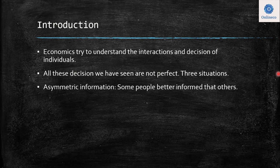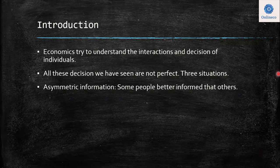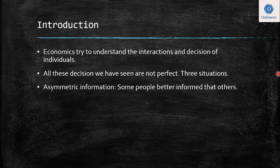The first thing we want to introduce is asymmetric information. As the name says, the information between parties is not balanced because some people have better information than others. Some people are better informed than others, and because of this information, some parts of the market can take advantage of that, and then the end situation is not going to be as expected.